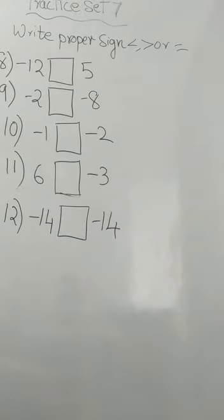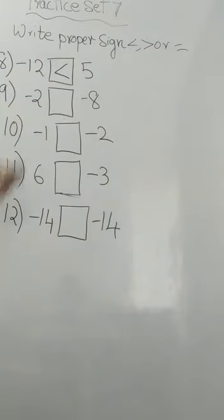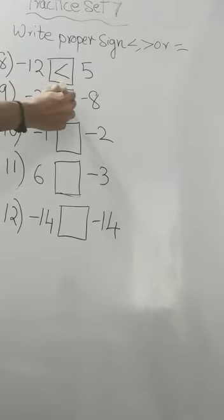Now the 8th one. Till 7 we have done. Now 8th one: minus 12 and 5. A positive one will be greater. Now, minus 2 and minus 8. Both are negative. Now, in the number line, how? Minus 8 is on the left side or right side of minus 2? It will be in the left side, right? After 0, the next left one is minus 1, minus 2, then again minus 3 like that. It reaches minus 8. So minus 8 is the left side of the number line, so minus 2 will be greater.